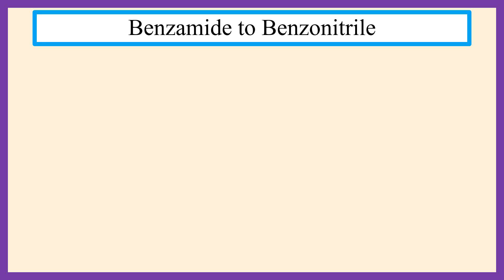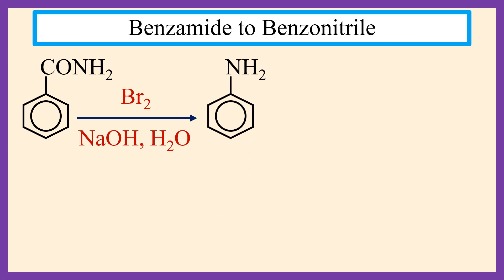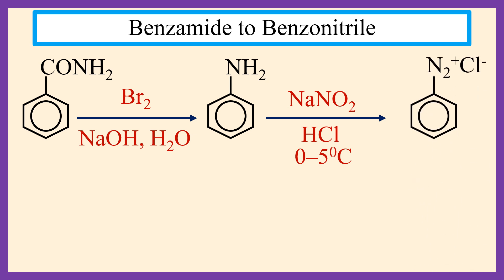Benzamide to benzonitrile. This is benzamide. Benzamide reacts with bromine in the presence of sodium hydroxide and water to form aniline. Aniline reacts with NaNO2 in the presence of HCl at 0 to 5 degrees centigrade to form benzene diazonium chloride.